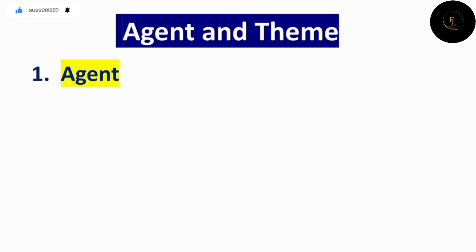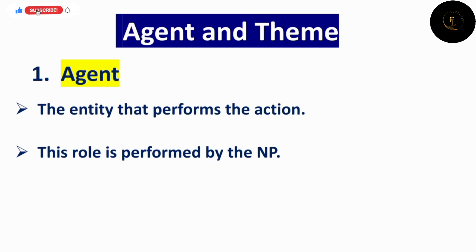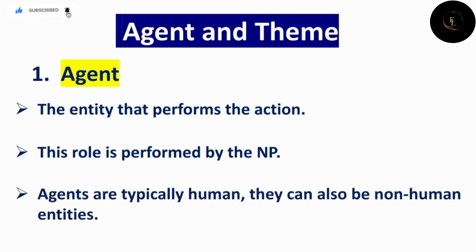سب سے پہلے agent کو discuss کرتے ہیں۔ Agent کیا ہے؟ Agent ہم ایسے word یا ایسی entity کو کہتے ہیں sentence میں جو action perform کرتا ہے۔ یاد رکھیں، agent وہ ہے جو action perform کرتا ہے، نہ کہ action خود۔ Agent normally کوئی بھی noun phrase ہوگا جو sentence میں ہوگا۔ Agents ضروری نہیں کہ humans یا livings ہوں — یہ non-human یا non-living entities بھی ہو سکتی ہیں۔